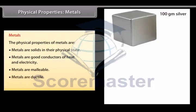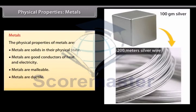Ductile. Metals can be drawn into wires. For example, 100 GM of silver can be drawn into a thin wire of about 200 meters long.